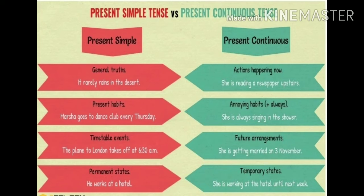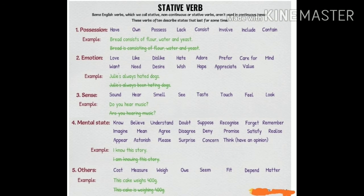Now, moving on to verbs not normally used in the present continuous tense, found on page 55 of your book. These are also known as stative verbs. First, verbs of possession — for example, 'Bread contains flour, water, and yeast' is correct; 'Bread is containing flour' is wrong. Second, verbs of emotion — 'Jules always hated dogs' is correct; 'Jules has always been hating dogs' is wrong.